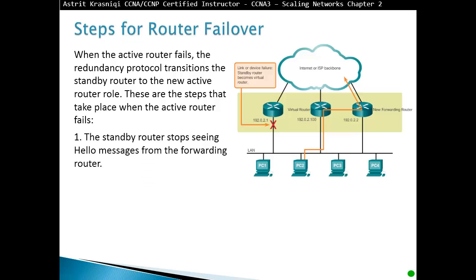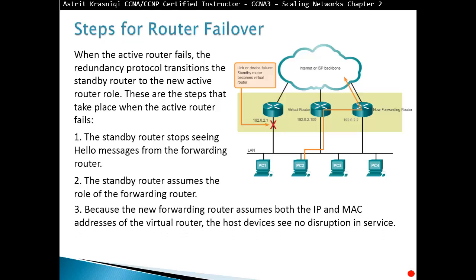The standby router stops receiving hello messages from the forwarding router, then assumes the role of the forwarding router and becomes the new active router. Because the new forwarding router assumes both the IP address and the MAC address of the virtual router, the hosts see no disruption in service.